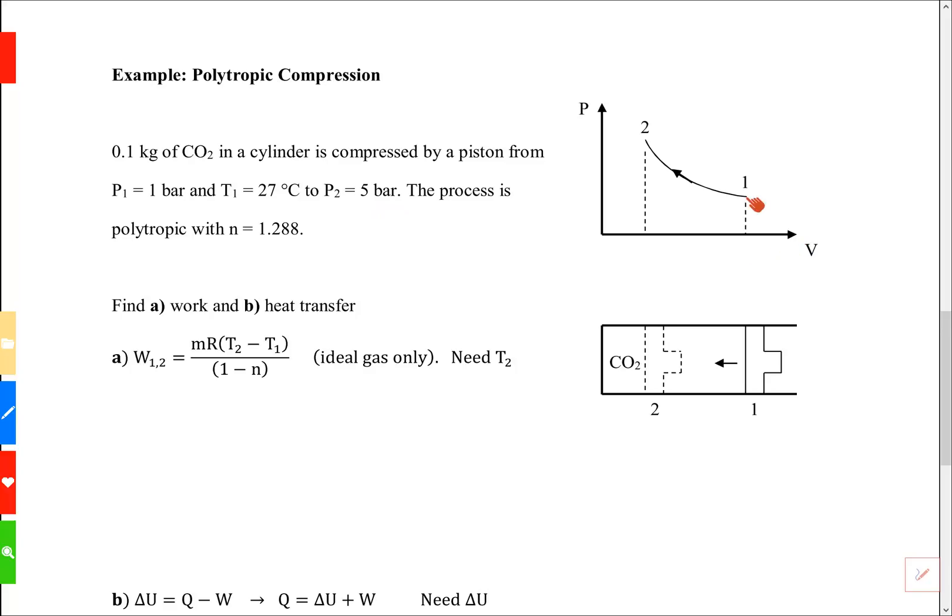So on a PV curve, state one is this larger volume, state two is a smaller volume, and a higher pressure.